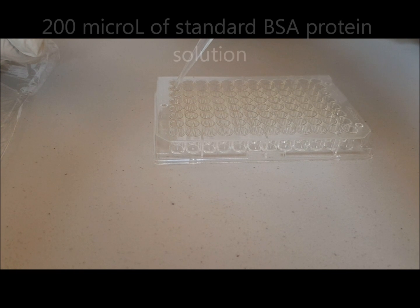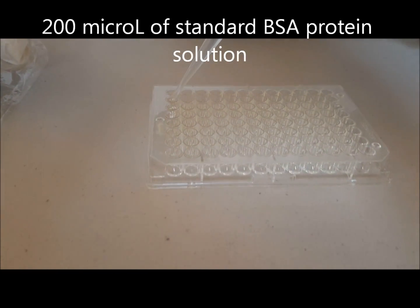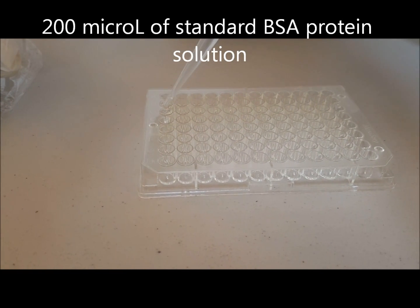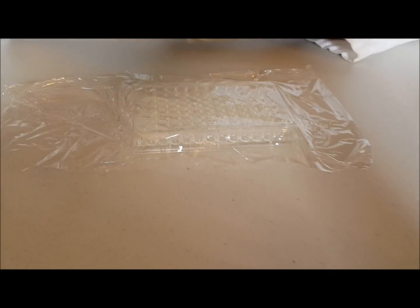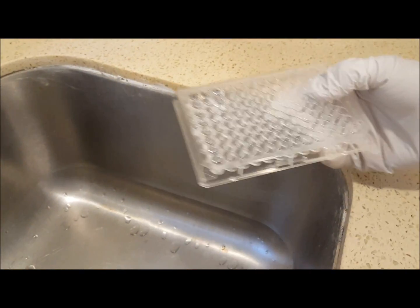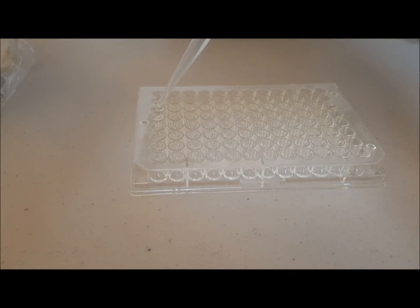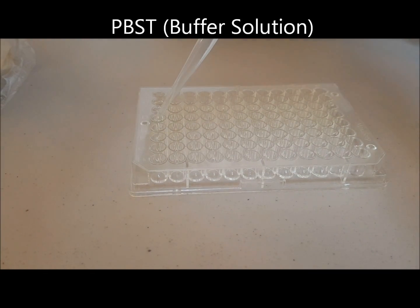As the next step, 200 microliters of blocking standard BSA protein is added to the wells. It's incubated for one hour at room temperature. The excess is then removed. The buffer is once again used to wash the wells.